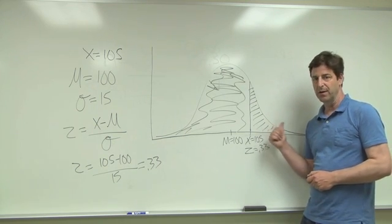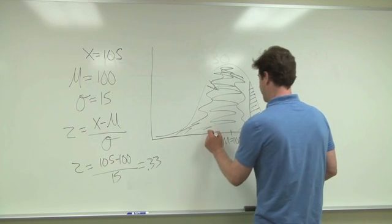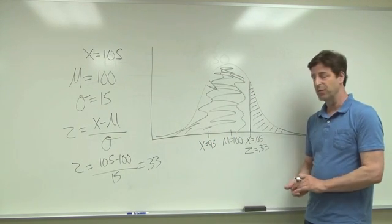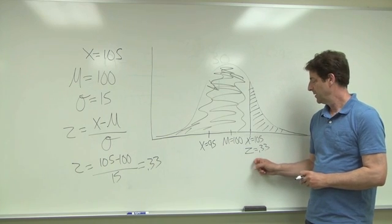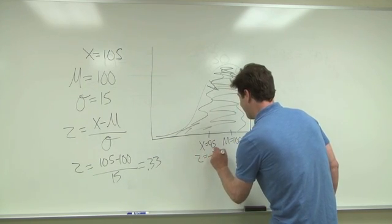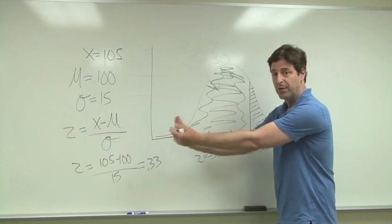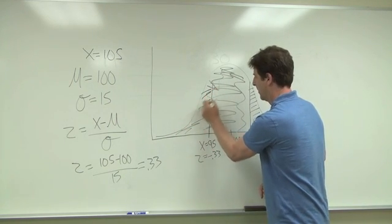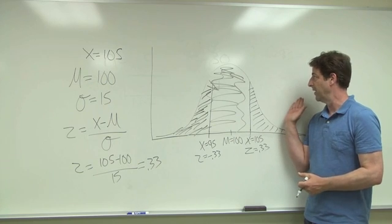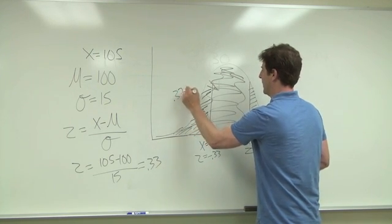First, whatever applies on the positive side above the mean would also apply on the negative side. So if we had a raw score of 95 and we calculated the z-score, we would get the same z-score but it would just be negative — z equals negative 0.33. In this case, we would want to know what's the proportion of the normal distribution that falls below this z-score, and it would be the same as the proportion that fell above z = +0.33, which would be 0.3707.